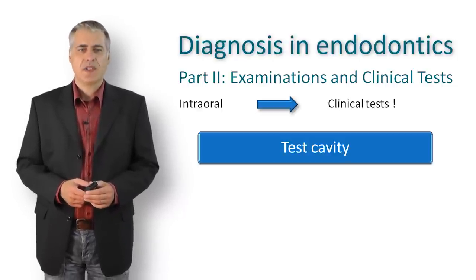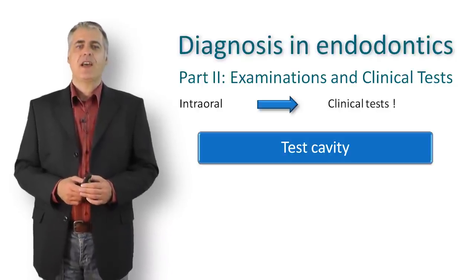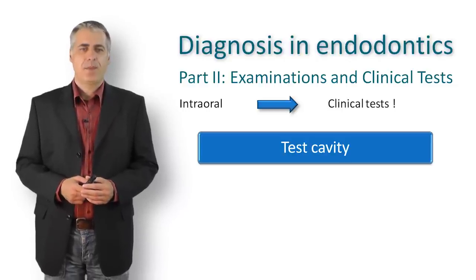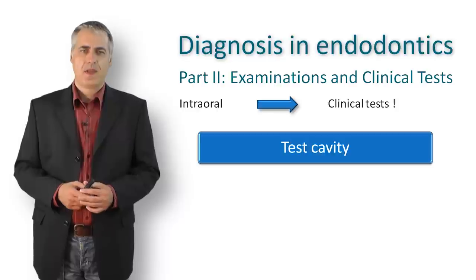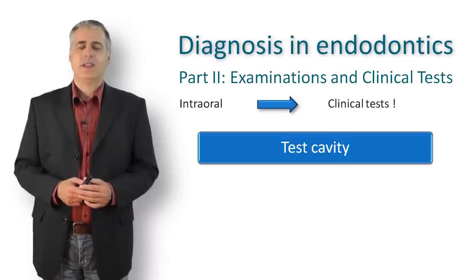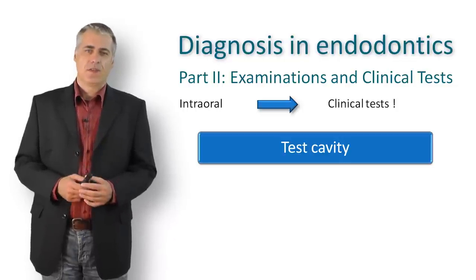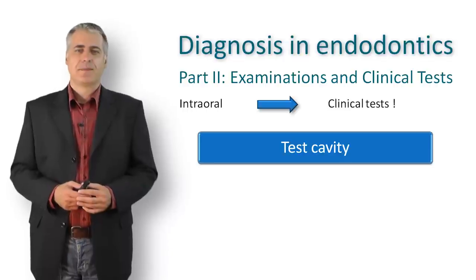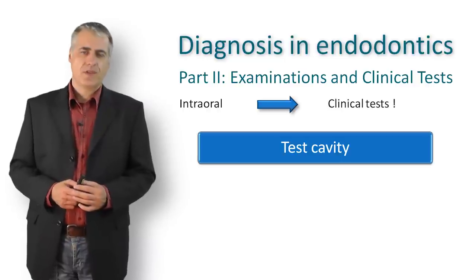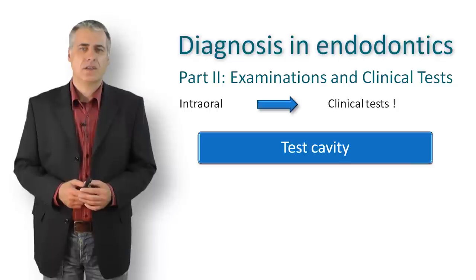In such cases, a small access cavity preparation can be made through the crown or the tooth without anesthesia — when the bur reaches the dentine and the patient feels pain, it is a sign of vital pulp tissue, though it does not confirm a vital tooth similar to a conventional pulp test. If there is no response even deep in the dentine, it is an indication for necrotic pulp. This test is rarely performed but is useful when other tests have failed or were inconclusive.